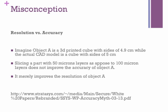Imagine you have a 3D printed cube, object A, and you measure it to have dimensions of 4.9 cm, while the actual CAD model on your computer has sides of 5 cm. By slicing the part with a smaller layer height, you're not improving the accuracy — the part is still 0.1 cm away from the actual dimensions. You are merely improving the resolution of object A.